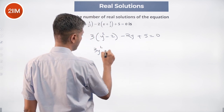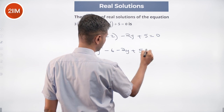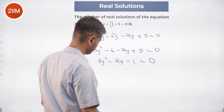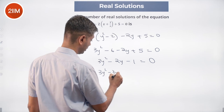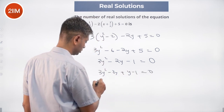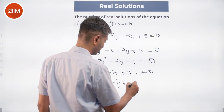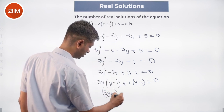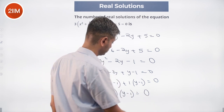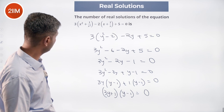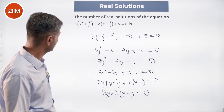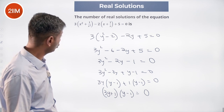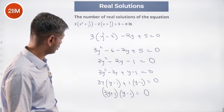3y squared minus 6 minus 2y plus 5 equals 0. Let me fix this: y squared minus 2, so 3y squared minus 6 minus 2y plus 5. So 3y squared minus 2y minus 1 equals 0.